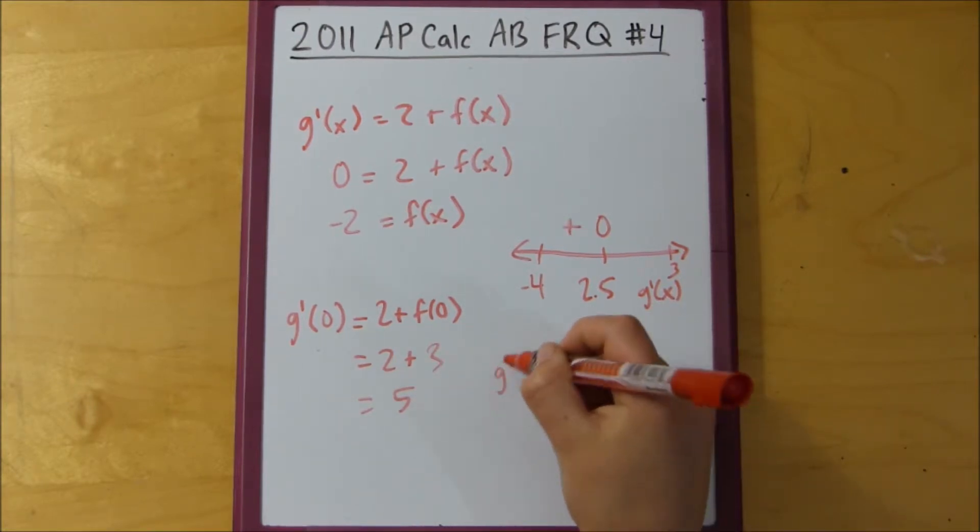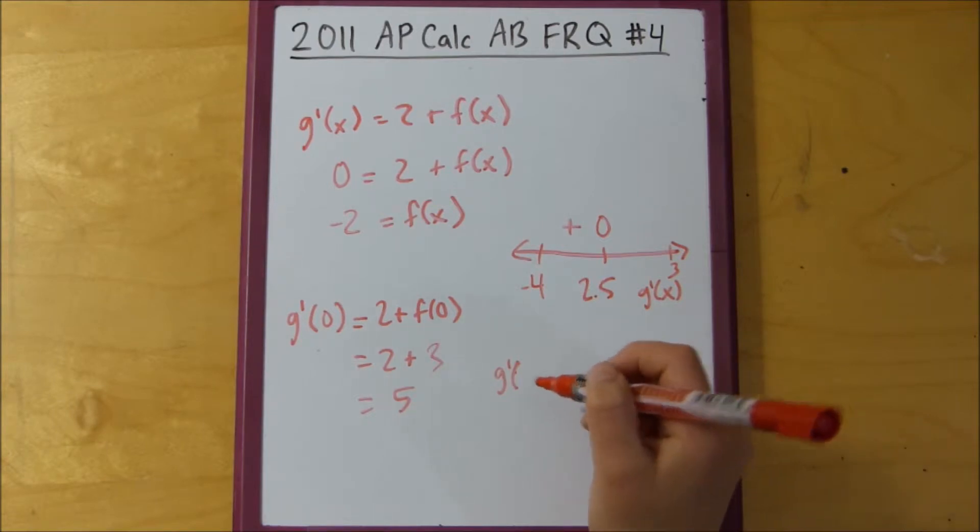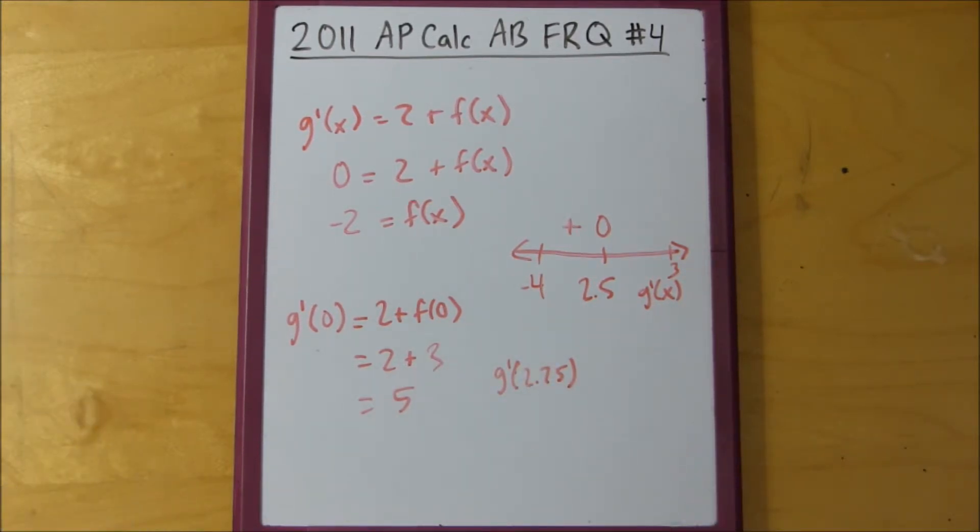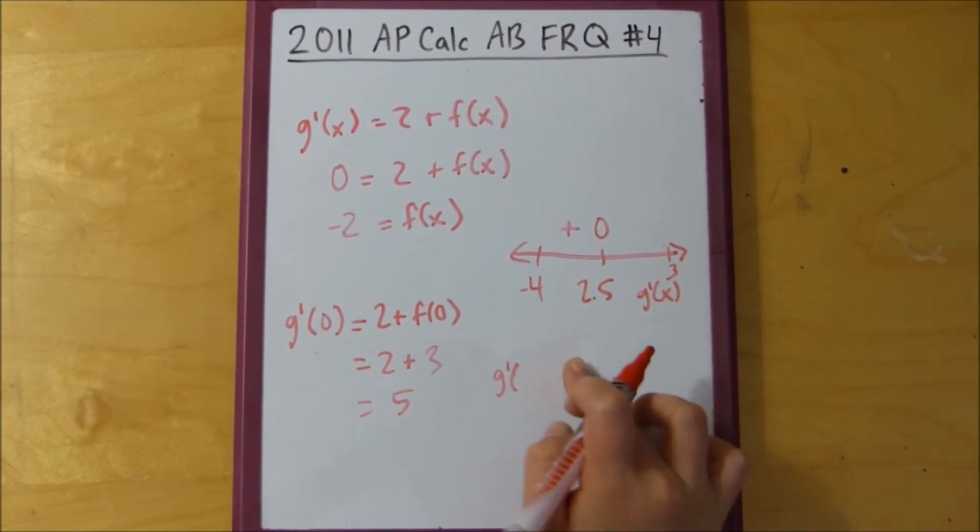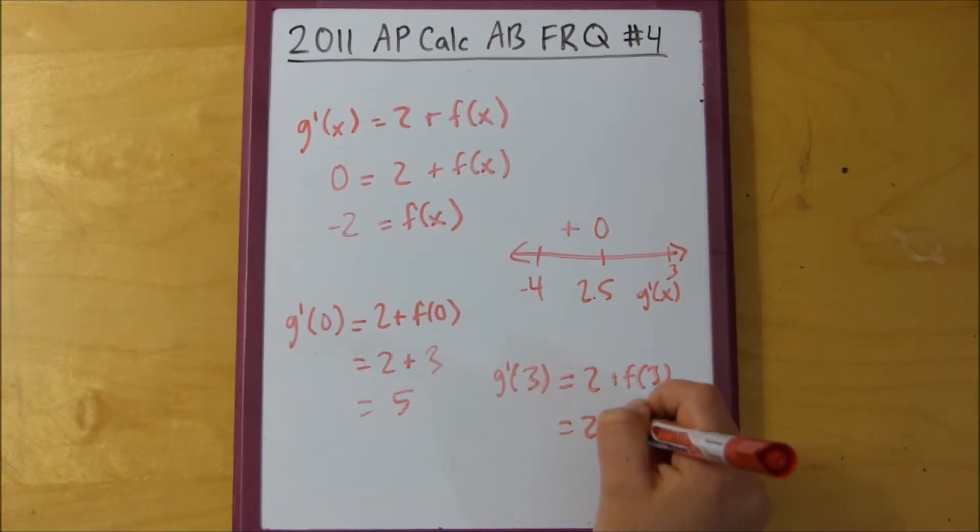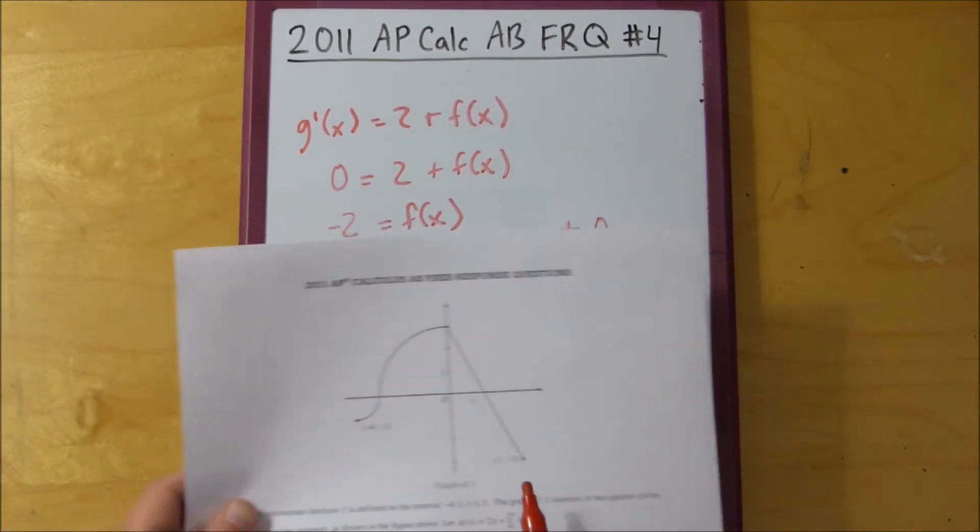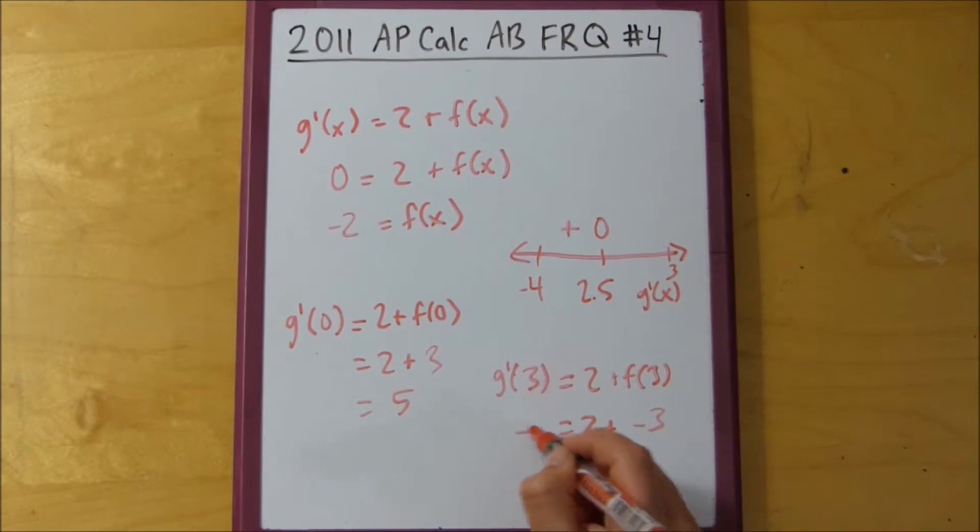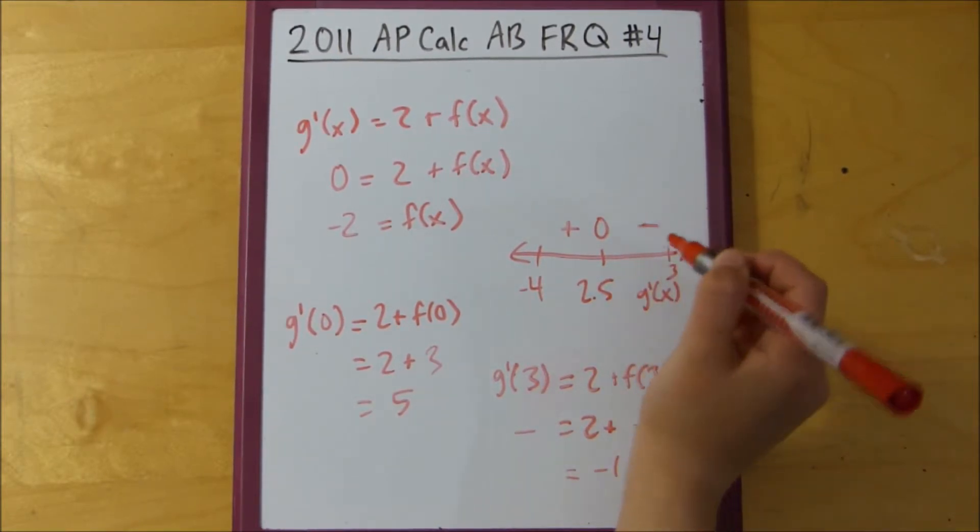So, let's say, we could just do 3. We could just do 3. Equals 2 plus f of 3. And this equals, f of 3 is negative 3, so this is going to be a negative number. It's going to be negative 1.